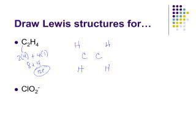Now, I've drawn these structures many, many times, so I know already that the single bonds are not going to cut it, and that we're going to need double bonds. When we do this, you'll see each carbon has eight valence electrons. Each hydrogen has two, and we have 2, 4, 6, 8, 10, 12 electrons total, so this would be a correct Lewis structure for C2H4.